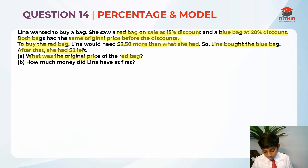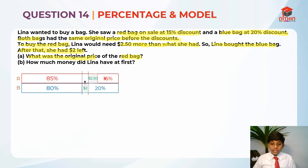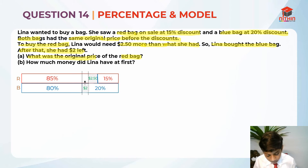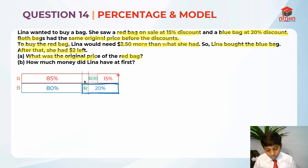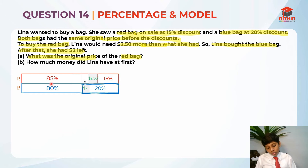Now we move on to drawing the model. For the red bag, it's a 15% discount, and for the blue bag, it's a 20% discount. So there's a 15% discount, meaning for the red bag she needs to pay 85%. But for the blue bag there was a 20% discount, so she only needs to pay 80%.